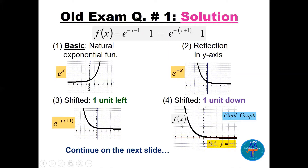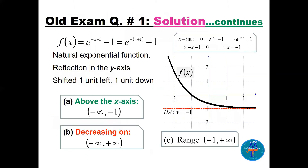This is the final graph of f — shown in black. For the X-intercept, set y = 0: e^(−x−1) = 1, so the power equals zero, giving x = −1. The graph is above the X-axis from minus infinity to minus one. The function is decreasing everywhere — from minus infinity to plus infinity. The range is (−1, ∞), both endpoints open.